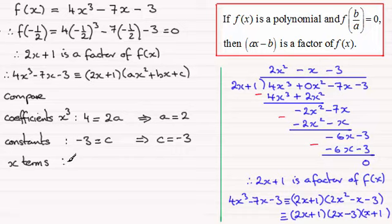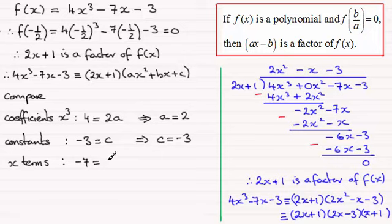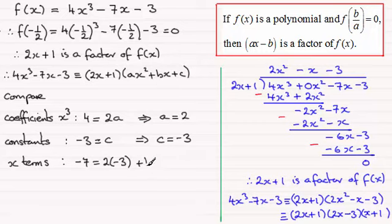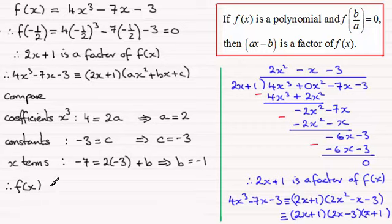Looking at the x terms: on the left we have minus 7. On the right, we get an x term from 2x times c, giving 2c·x, which is 2 times minus 3, so minus 6. We also get an x term from 1 times bx, giving plus b. So minus 7 equals minus 6 plus b. Adding 6 to both sides: b equals minus 1.